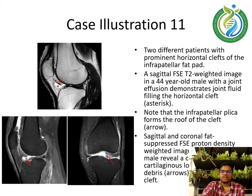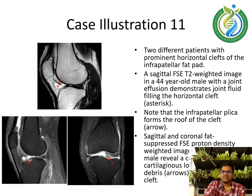Case illustration 11 shows two different patients with prominent horizontal clefts of the infrapatellar fat pad. A sagittal FSE T2-weighted image in a 44-year-old male with a joint effusion demonstrates joint fluid filling the horizontal cleft; note that the infrapatellar plicae forms the roof of the cleft. Sagittal and coronal fat-suppressed FSE proton density weighted images in a 71-year-old male reveal a cluster of small cartilaginous loose bodies and debris lodged in the cleft.